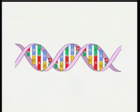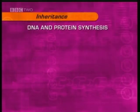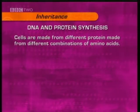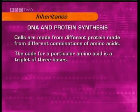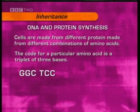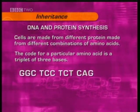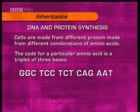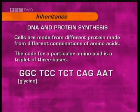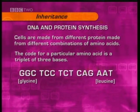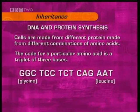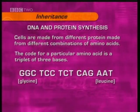The final DNA structure is the famous double helix shape. The sequence of bases in the DNA provides the code that determines what kind of cell is produced. Cells are made from different proteins, which are made up from different combinations of amino acids. The code for a particular amino acid is a triplet of three bases, such as GGC or TCC. Each amino acid has a different code — for example, GGC is the code for the amino acid glycine, and AAT is the code for leucine, whether in humans, sunflowers or bacteria. It's the sequence of triplets in the DNA that determines the sequence of amino acids in a protein.